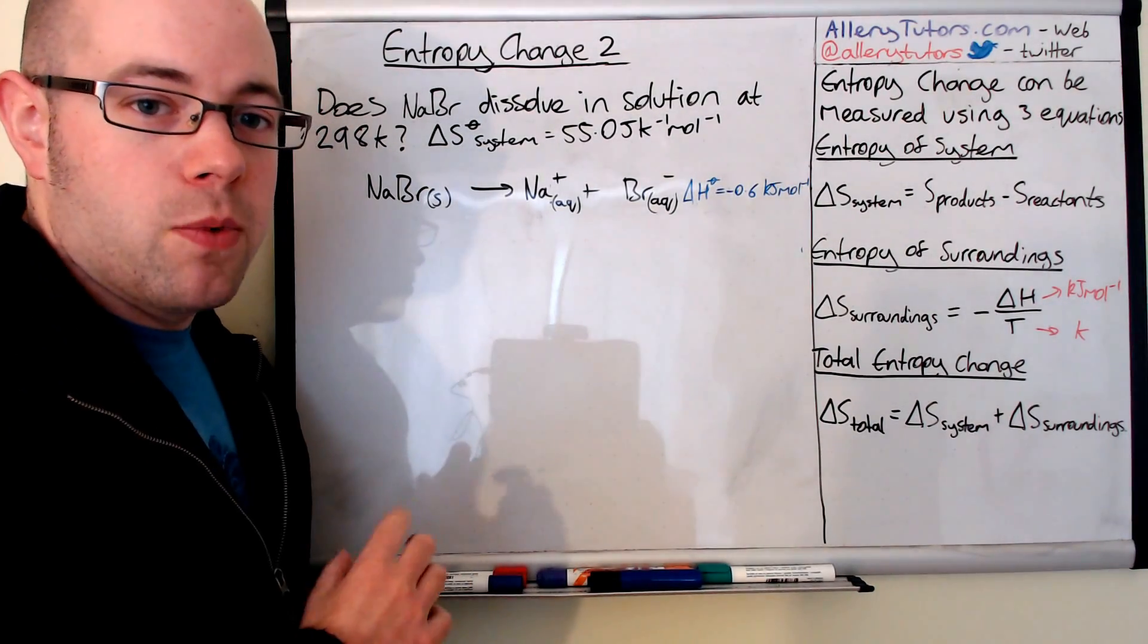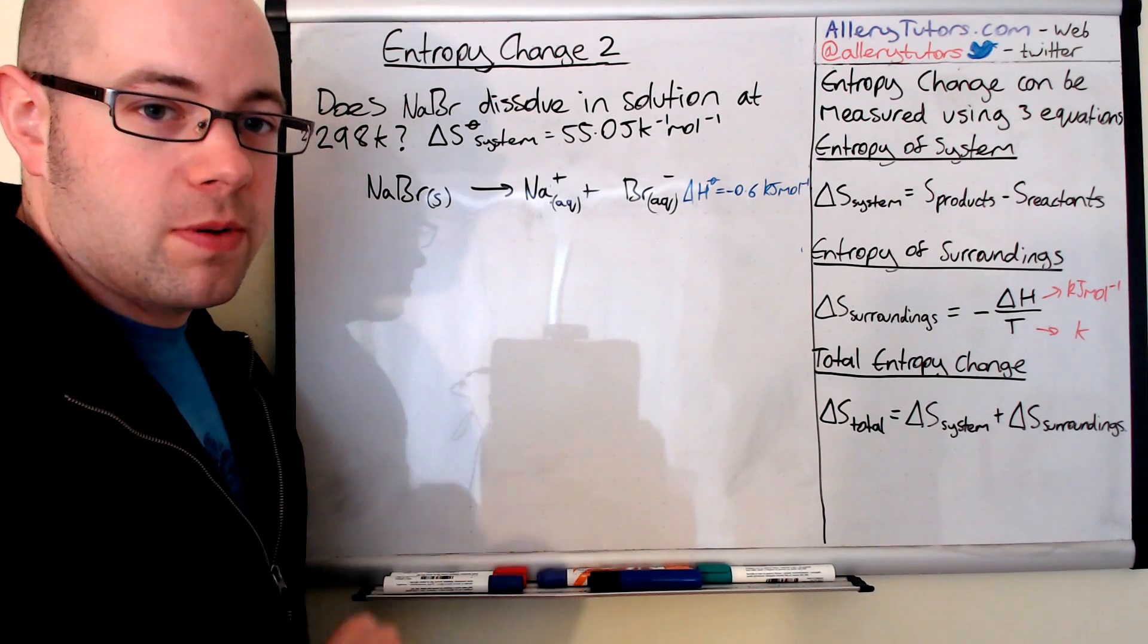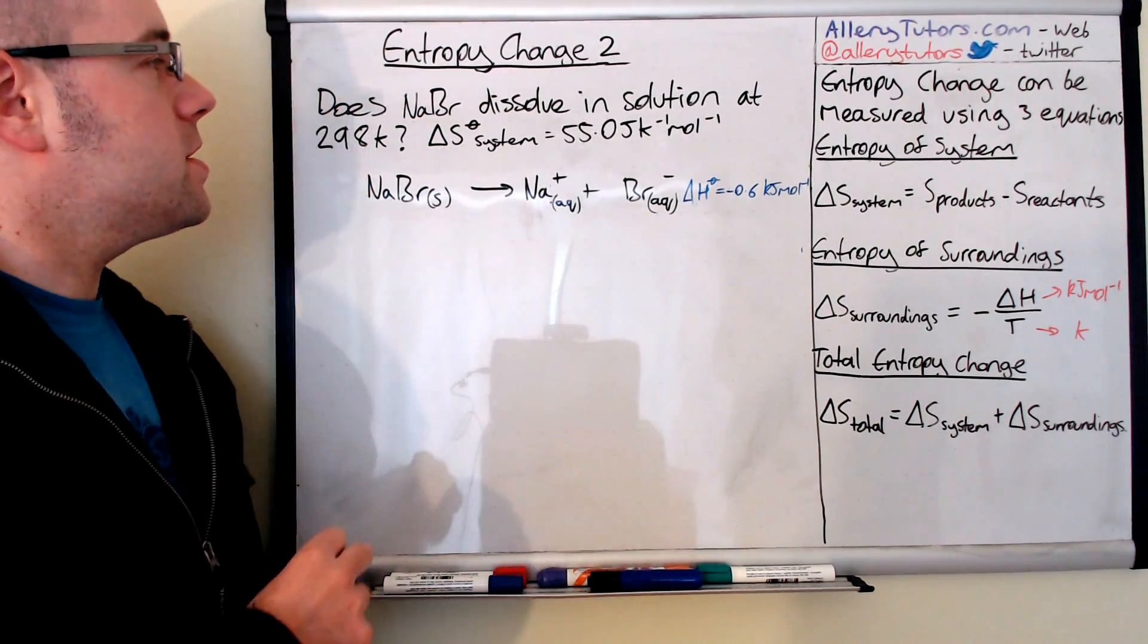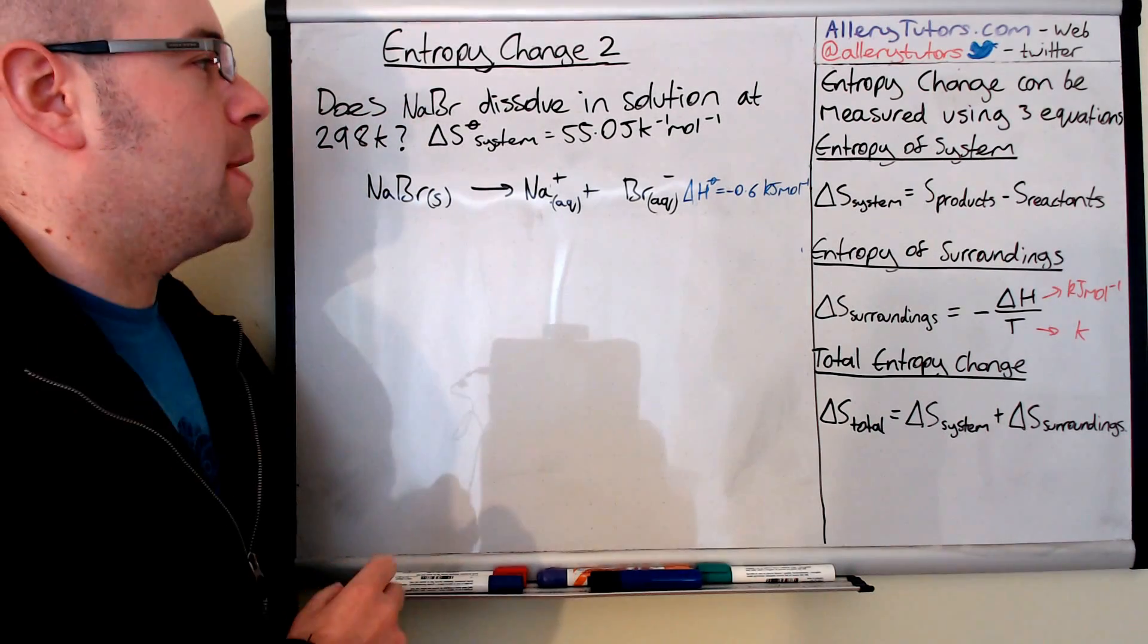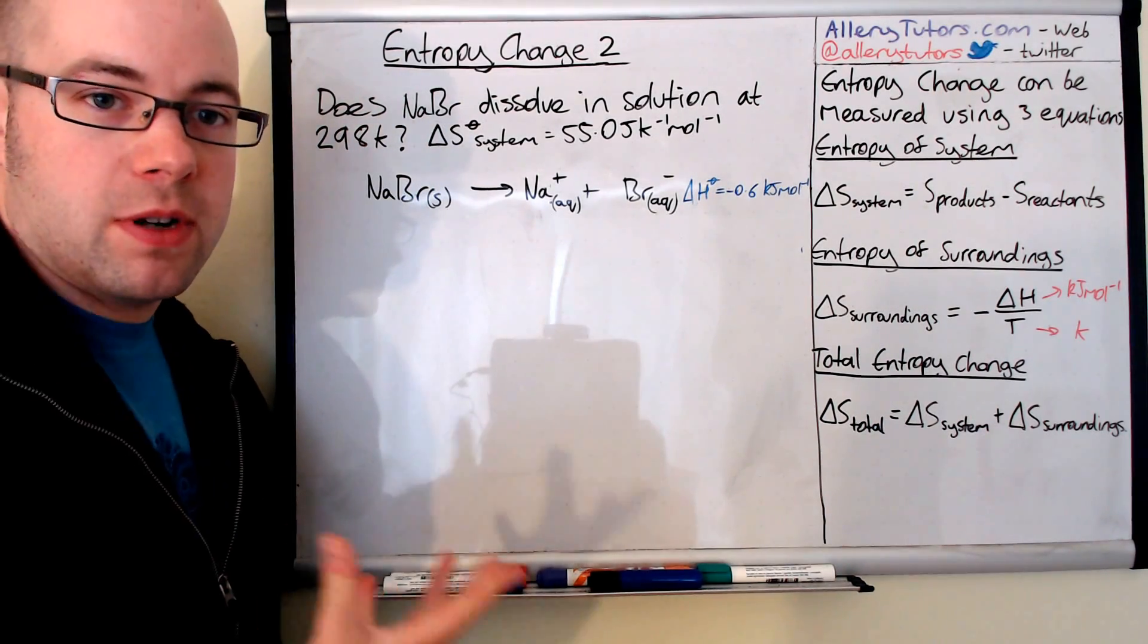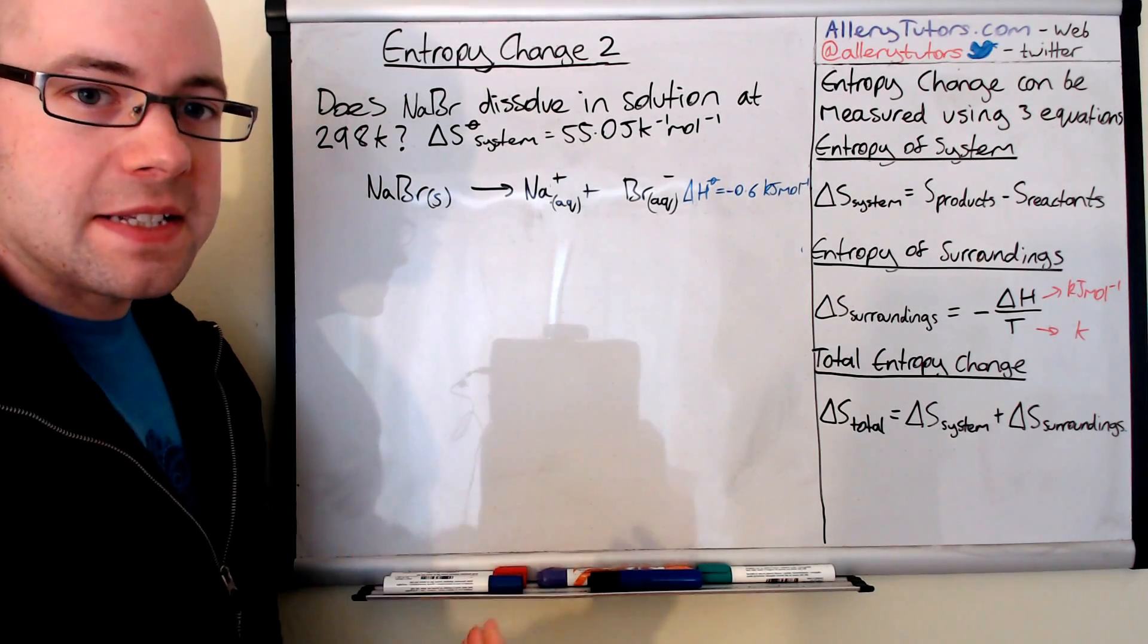We're going to look at a worked example. We're going to use some of these equations on the right here to help work this out. So here's the question: does sodium bromide dissolve in solution at 298 Kelvin, which is room temperature, 25 degrees Celsius. That's the standard temperature.